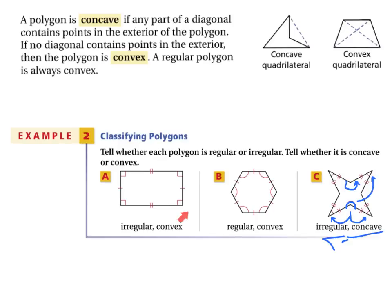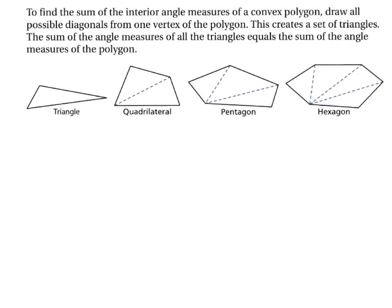Another way to think of concave and convex: concave will bend inward, convex will not. Now we're going to start talking about how you find the sum of the interior angle measures of a convex polygon.